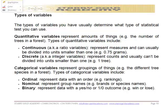Now let's look at the types of variables. The type of variables we have usually determines what type of statistical test you want to use. We have quantitative variables, which represent amounts or trends — for example, number of trees. This type includes continuous and discrete variables. Continuous variables, also known as ratio variables, represent measures that can usually be divided into units smaller than one. Discrete variables, also known as integer variables, represent counts that usually cannot be divided into units smaller than one.